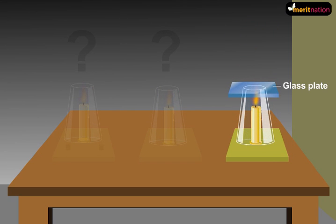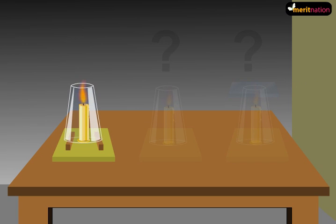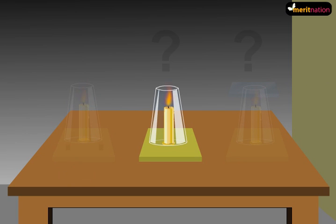Now what do you observe? You will observe that the candle burns freely in the first case. What happens in the second case? The flame flickers and produces more smoke before going off.